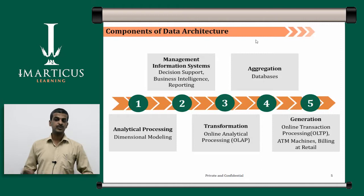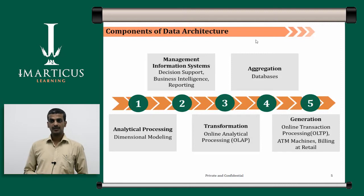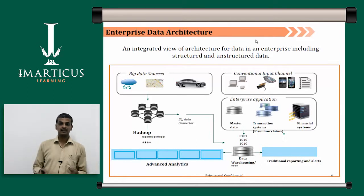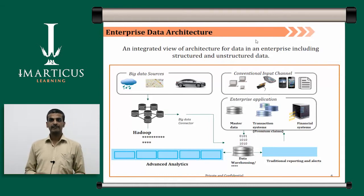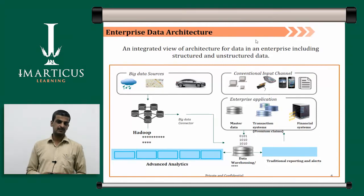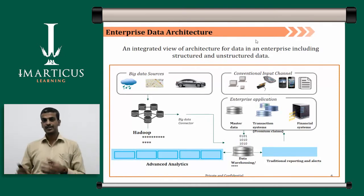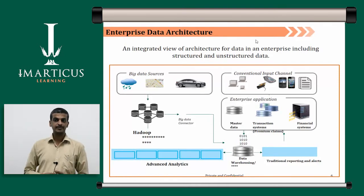You need to consider the generation of data in the form of online transaction processing — how the data was captured and recorded in current operational databases and how it was then archived and put in your data warehouses as your OLAP data. The various sources of data collection include ATM machines, billing at retail outlets, and various other mechanisms of data capturing and storing. This is an integrated view of enterprise data architecture including structured and unstructured data, contributed by many sources — big data sources, conventional input channels, and enterprise applications configured as data capturing devices. This data ultimately gets stored in the data warehouse for future analysis and reporting.